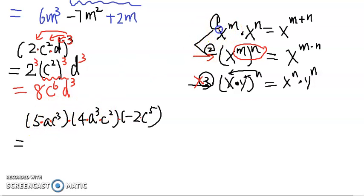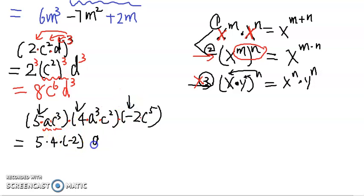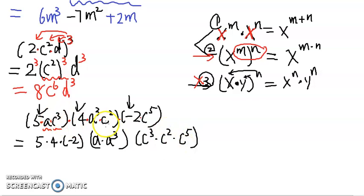Within each pair of parentheses they don't all have the same base, which tells us we have to move things around to put the same base together. The numbers 5, 4, and negative 2 can also be multiplied together. So we're going to put the numbers together, then a and a cubed together, and also c cubed, c squared, and c to the fifth together, since they all share base c.